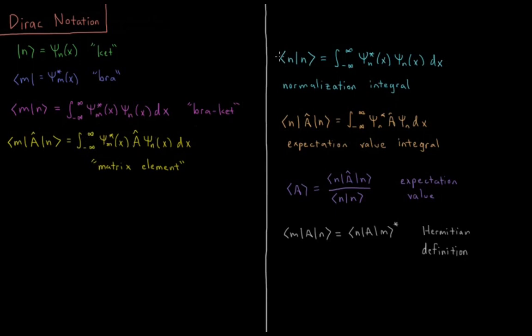So the bra ket nn is equal to a normalization integral. That's the integral from minus infinity to infinity with respect to x, or however many dimensions you have to integrate over. Psi star n of x, psi n of x. Our normalization integral, the bra ket nn would be equal to 1 for a normalized wave function.